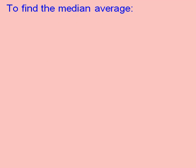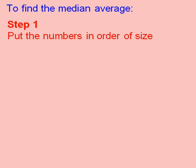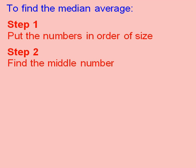So to find the median average, for step one we put the numbers in order of size from smallest to largest. For step two, we then find the middle number.